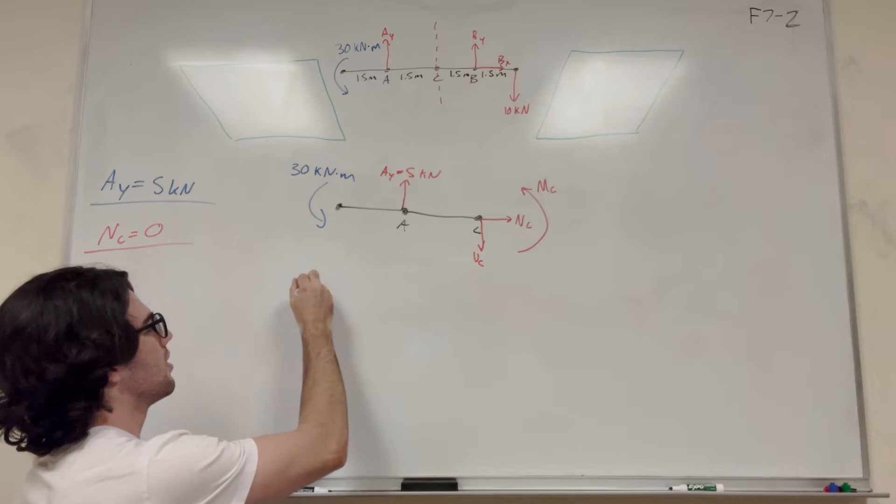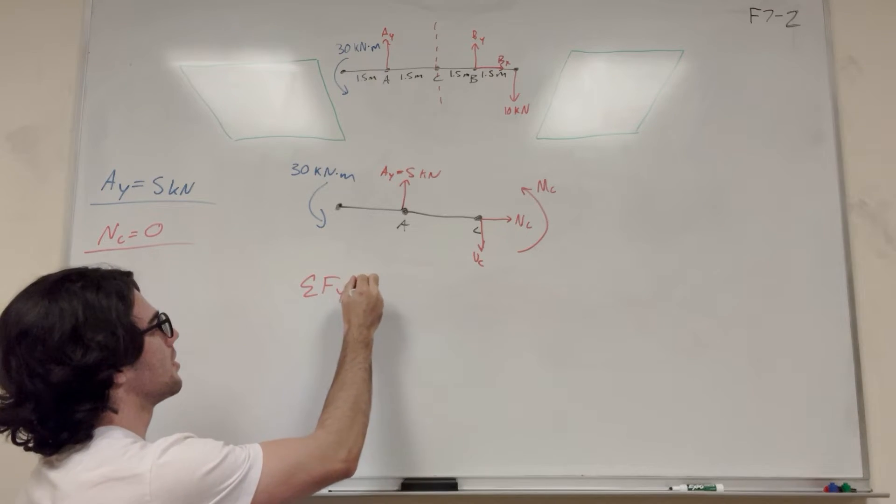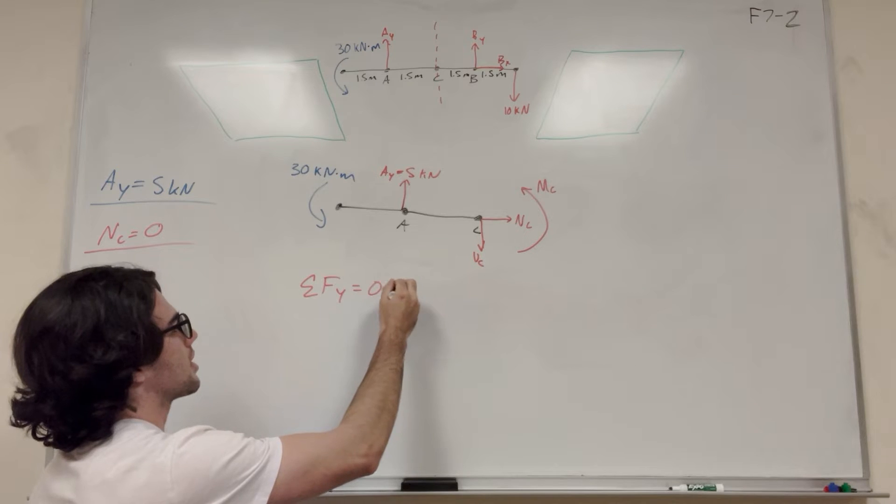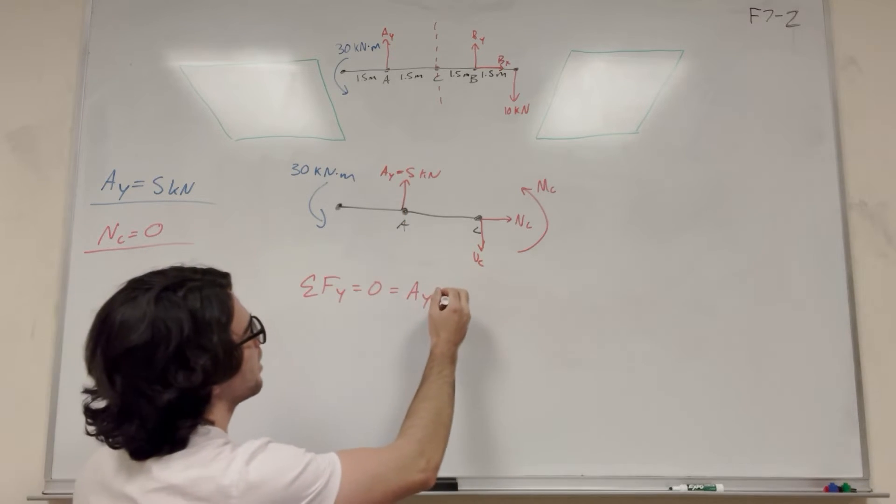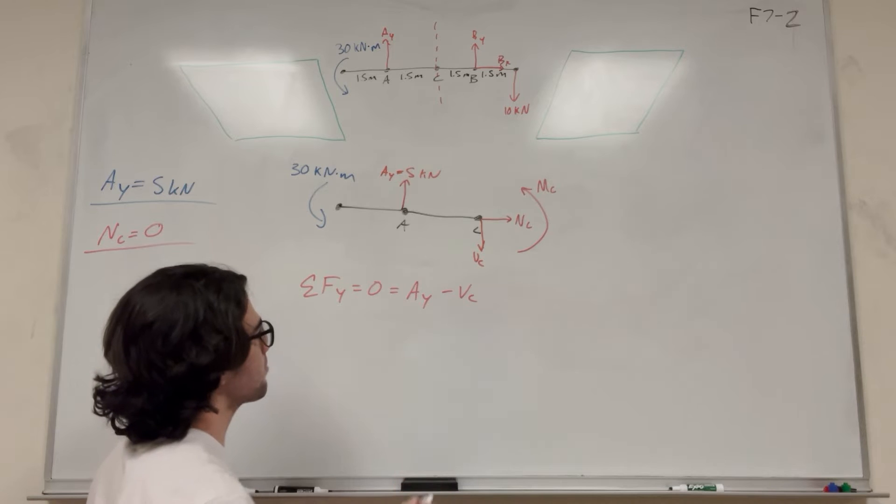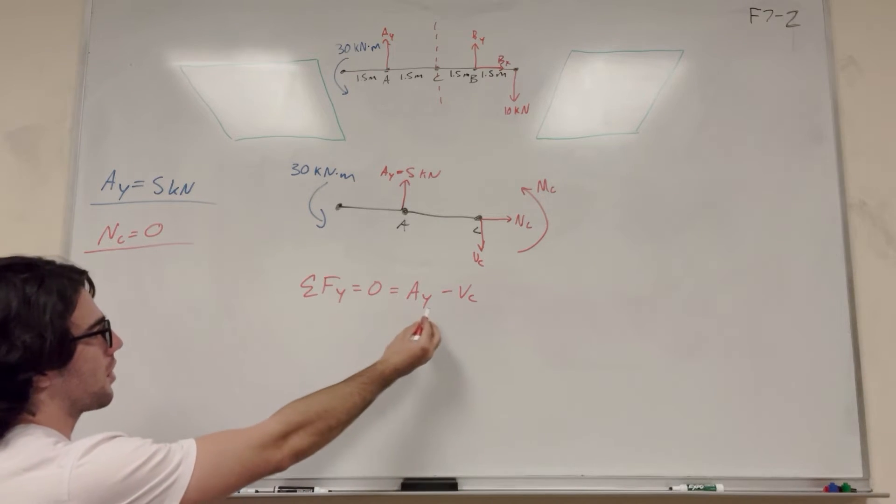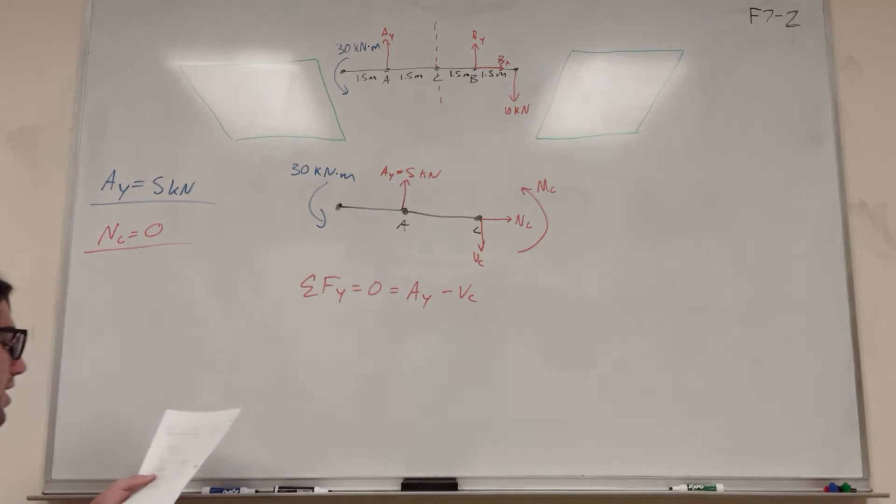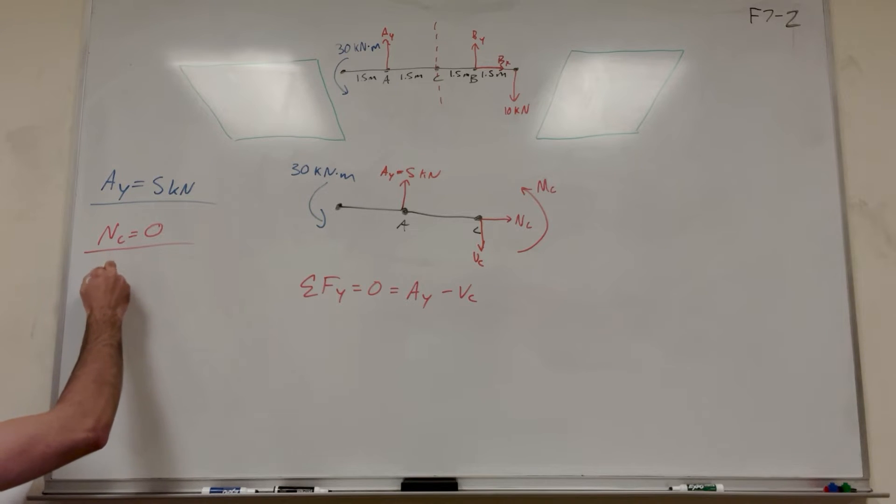So now let's do sum of the forces in the Y direction. So that's going to be zero. It's going to be equal to A_Y pointing upward, and then minus V_C. So of course you move V_C over. A_Y is equal to five. So then you're going to find that the shear force at C is equal to five kilonewtons.